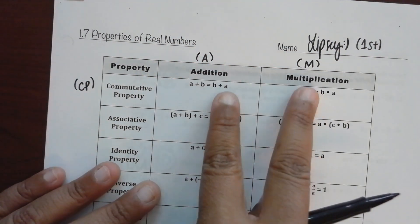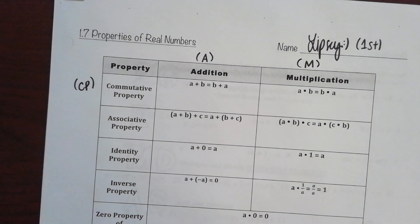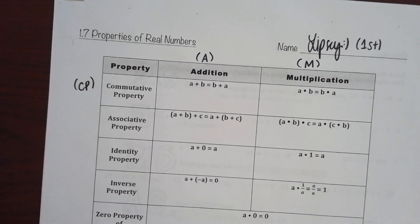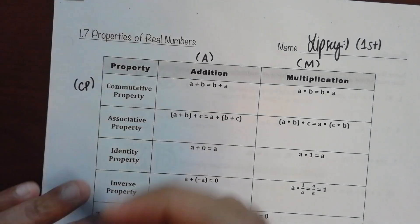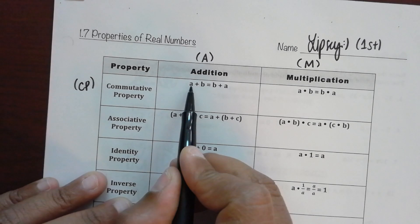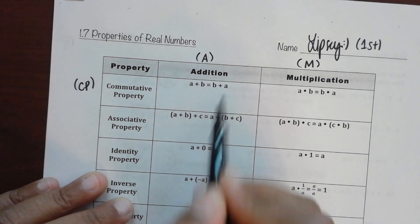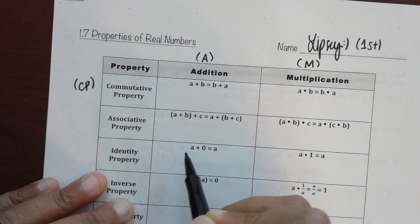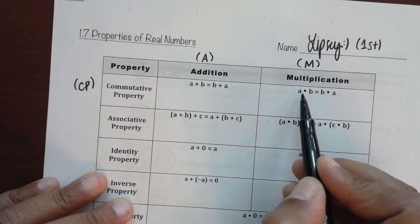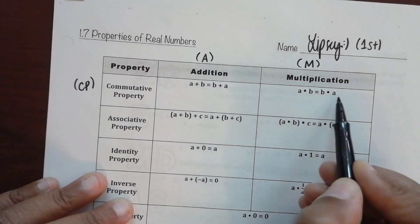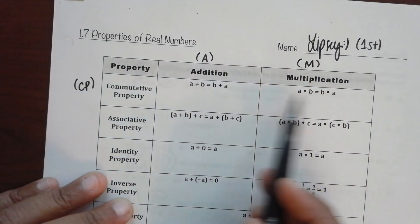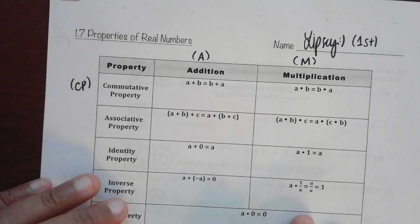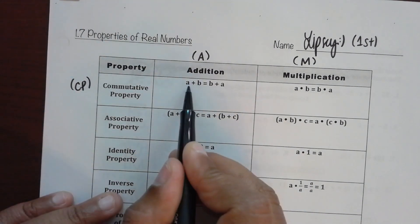It only works with these two operations because it keeps equivalency the same. The commutative property of addition is read as: if a plus b equals b plus a. Multiplication is: if a times b equals b times a. Can you see the actual property — what happened between this side and this side?